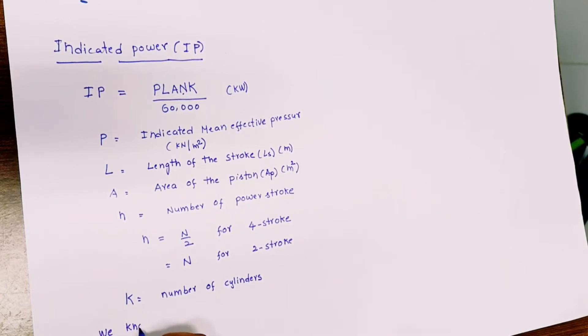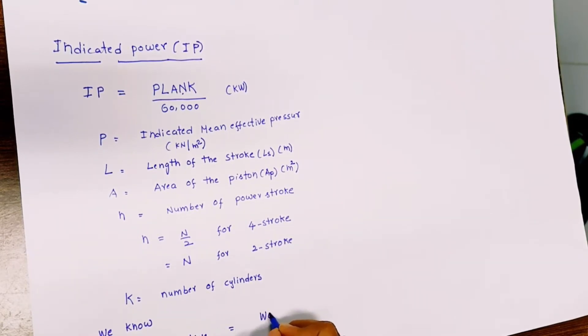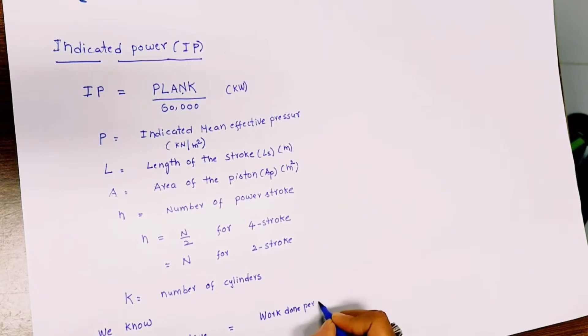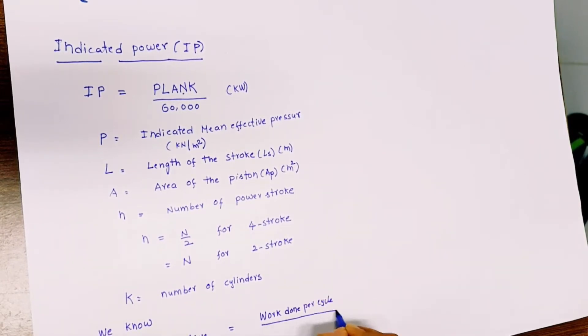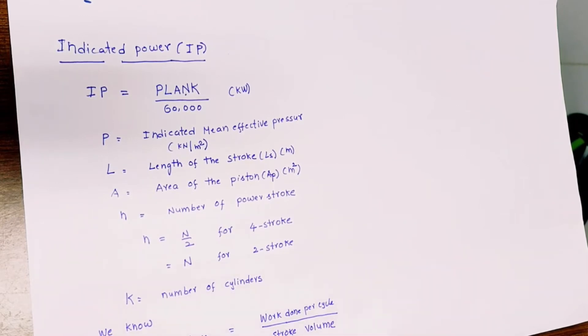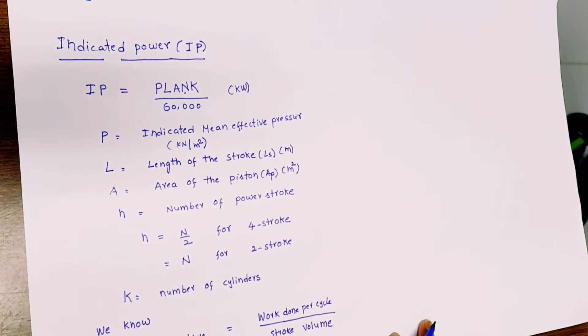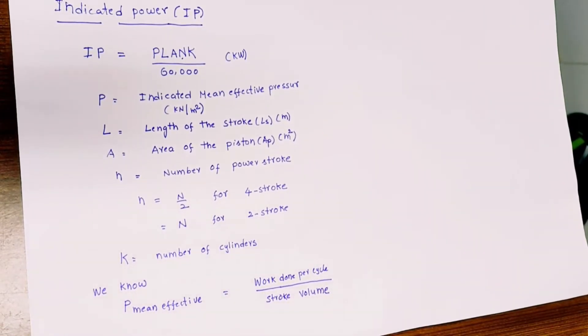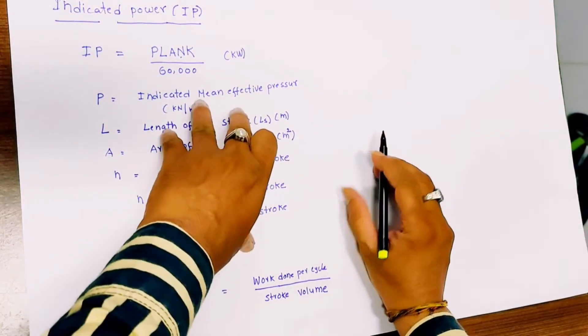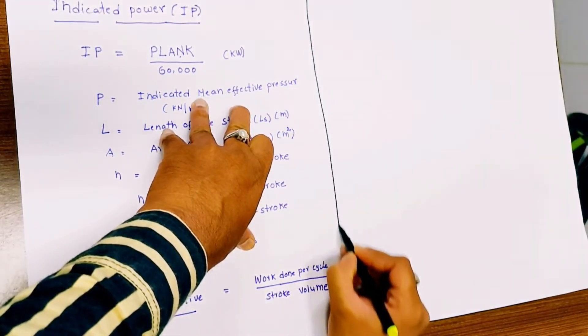But we know from yesterday's class, P, the mean effective pressure, is equal to work done per cycle divided by the stroke volume. This is one way of finding mean effective pressure. We will now go to another way to find out the mean effective pressure.